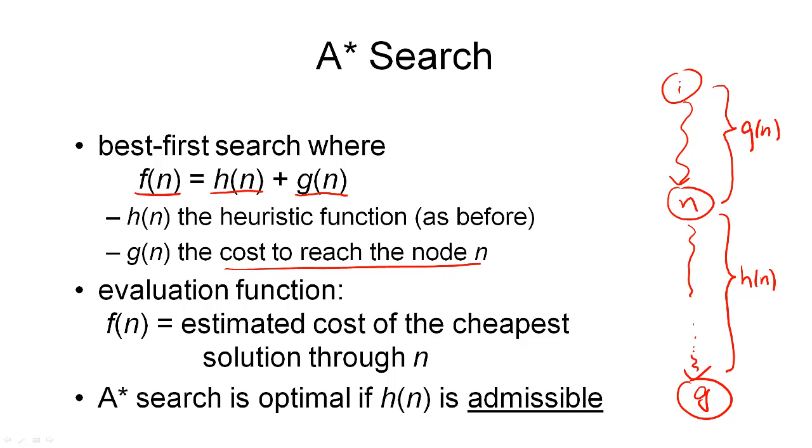One way to look at this is that greedy best-first search behaves a little bit like depth-first search. It tries to go deep into the search space as quickly as it can to a goal node. By adding g to h and using that as our evaluation function, we sort of add a breadth-first component to this depth-first search. In fact, the evaluation function we're using gives us the estimated cost of the cheapest solution through the node n.